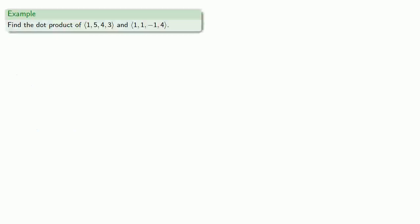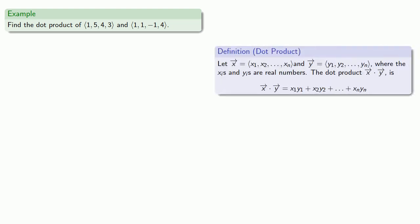So, for example, we might find the dot product of these two vectors with four components. We'll pull in our definition of the dot product and compute. We'll multiply our first components together.